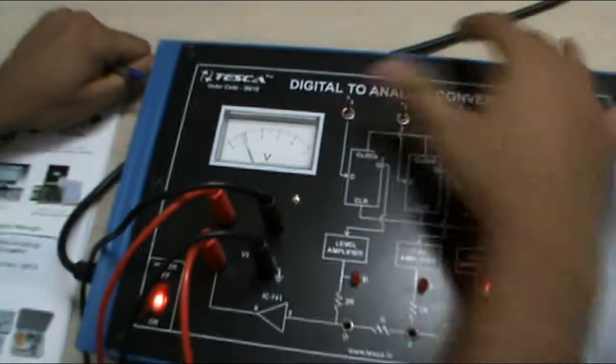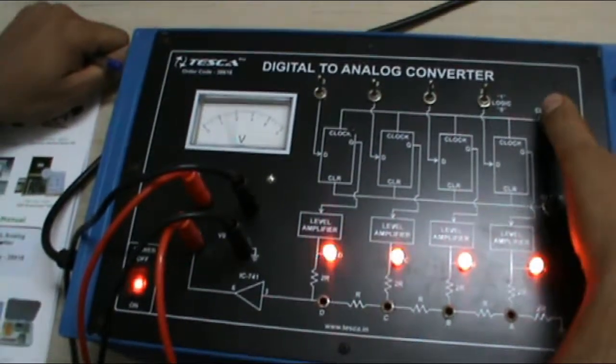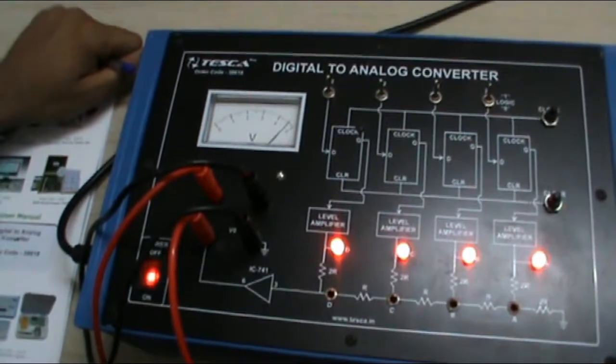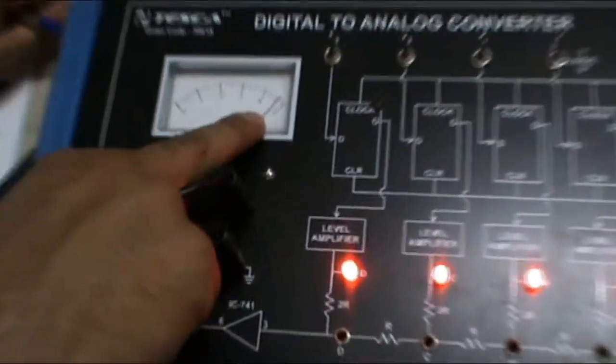Now, if we give input as 15. This is 1111 in binary. If we convert it into decimal which is 15, we will get the output voltage here.